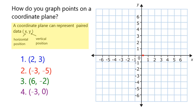This is (2,3). My first point is (2,3), so I go over 1, 2, and up 1, 2, 3, and plot my first point there corresponding to this ordered pair.